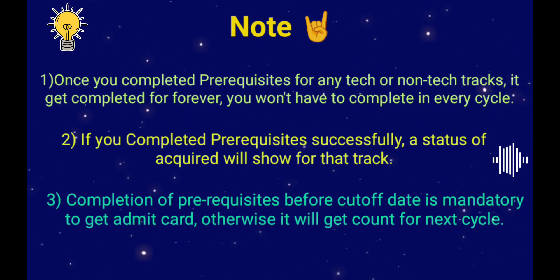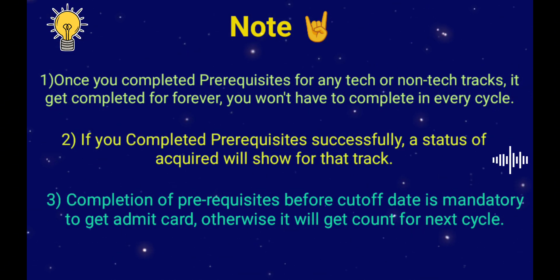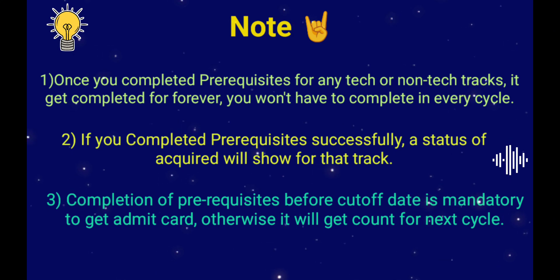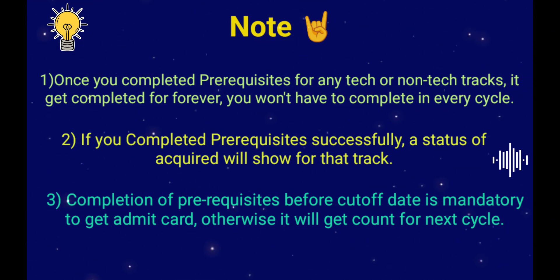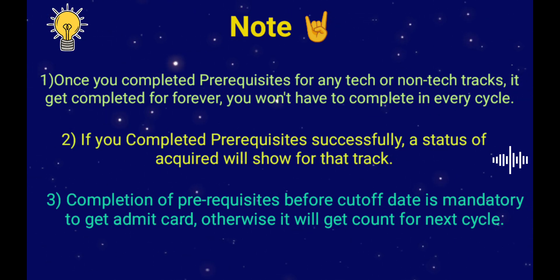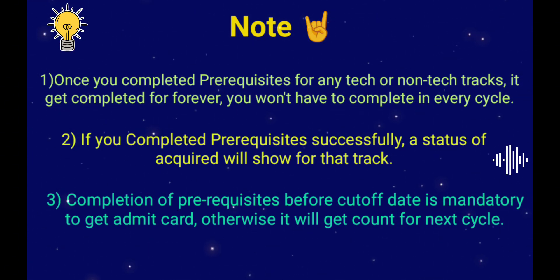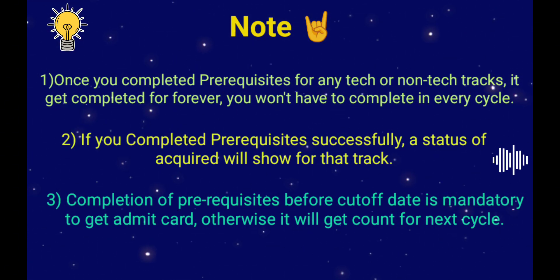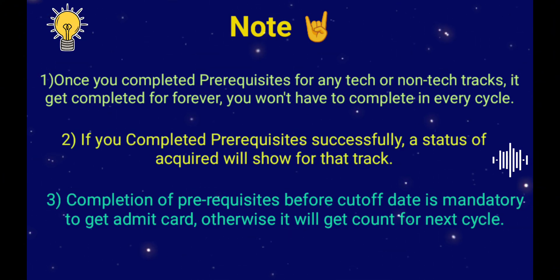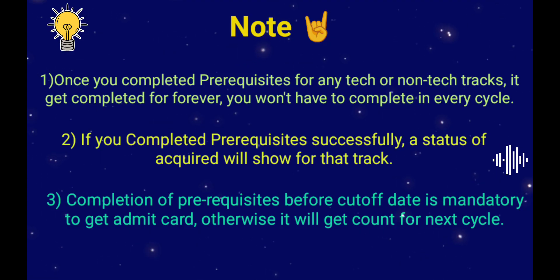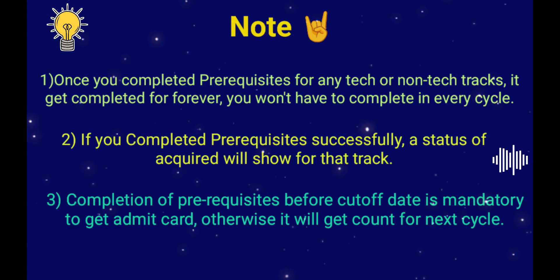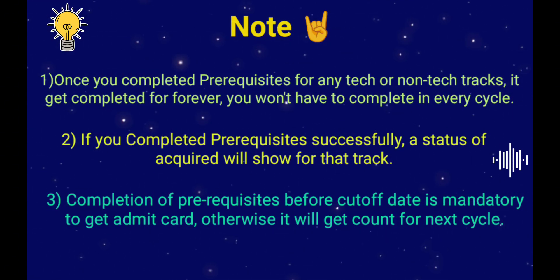For every WingsOne cycle, there is a cutoff date to complete the prerequisite for every track. Completion of the prerequisite before the cutoff date is mandatory to get the admit card for that track in the current cycle. If you complete the prerequisite after the cutoff date, it will be counted for the next cycle — you won't receive the admit card in the present cycle. So make sure you find out the cutoff date and complete your prerequisite before that.